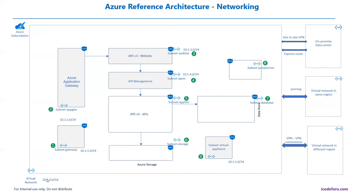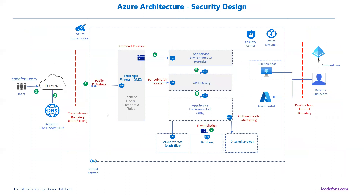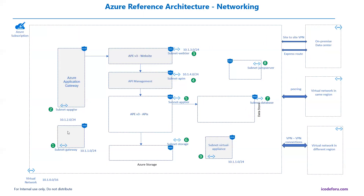Address space calculations play a very important role when you are actually creating the networking. If you have experience with on-premise networking, it is easy to understand. To fulfill this high-level architecture design, I'm going to have one subnet for the gateway. This is the default subnet you will see when you create a virtual network, and you cannot alter this name — it's going to remain the same subnet name.